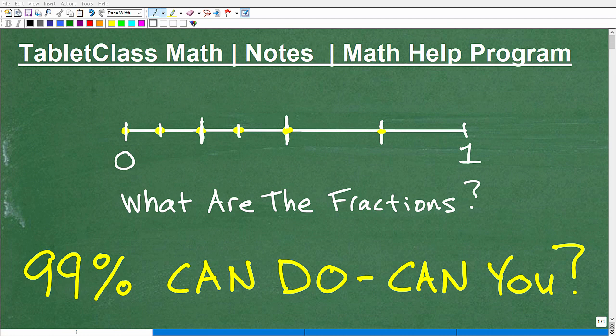Okay, so if you can use a ruler or a tape measure, then you should be able to do this little basic problem. You can see here it says, what are the fractions? I'm talking about these points here between 0 and 1. We've got this point, this point, and this point, and then I've got a couple bonus points right there. I just want you to indicate what these fractions are.